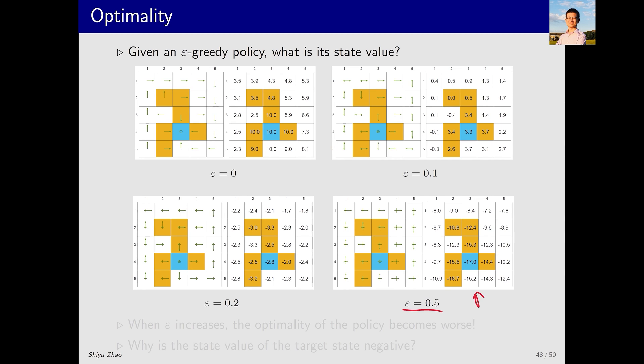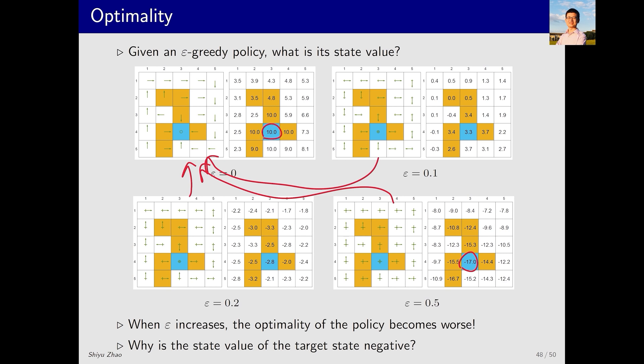Our definition of an optimal policy is indeed based on the state value. The optimal policy is the one with the highest state value. Thus, we know that although all policies maintain consistency with the optimal greedy policy, their optimality downgrades. Let's check the target area. In the optimal policy, it holds the highest value. However, with a larger epsilon, it becomes negative, even the lowest. This shift occurs because there's a significant probability of entering forbidden areas, leading to a lot of negative rewards.